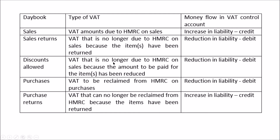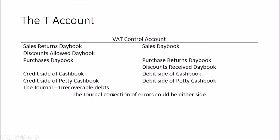This is how they line up in the T account. On the debit side: sales returns, discounts allowed, purchases day book, credit side of the cashbook, credit side of the petty cashbook, and the journal for irrecoverable debts — all reducing the liabilities to HMRC, potentially even creating an asset. On the credit side: sales day book, purchase returns day book, discounts received, debit side of the cashbook, debit side of the petty cashbook — all increasing liabilities to HMRC. Journal corrections of errors could sit on either side.